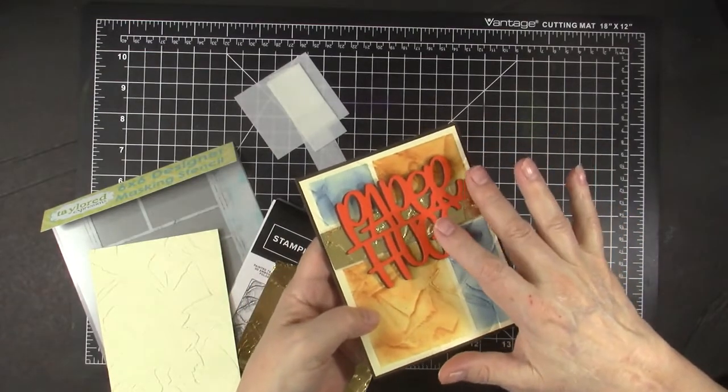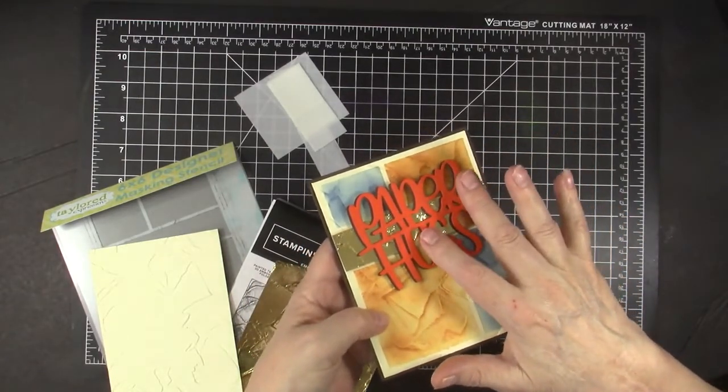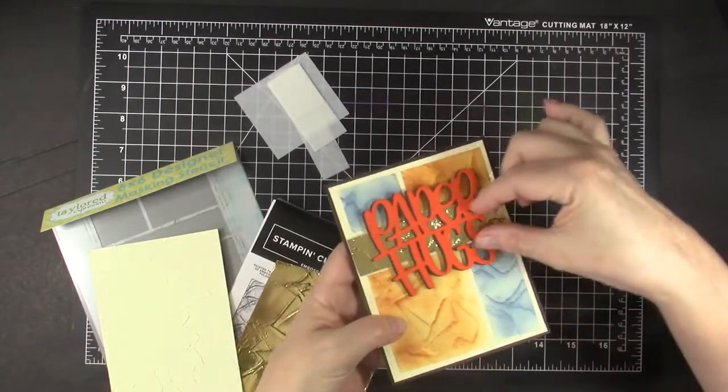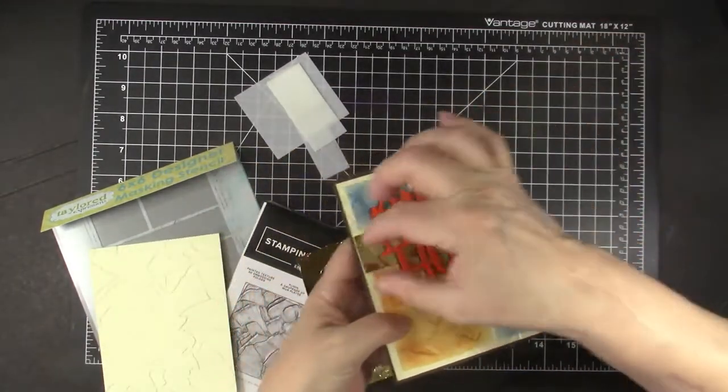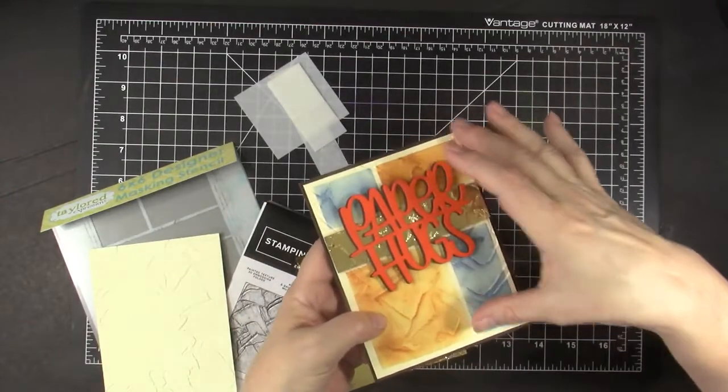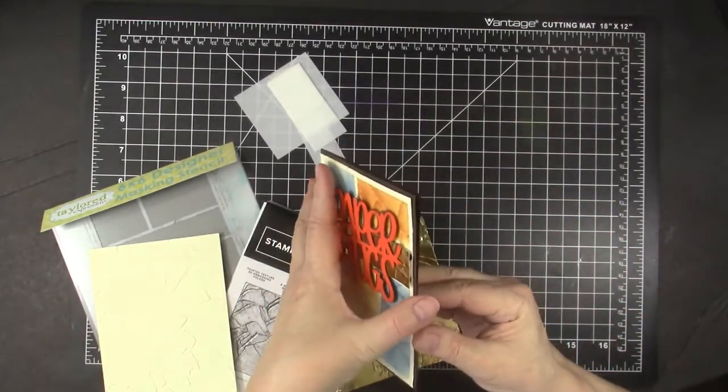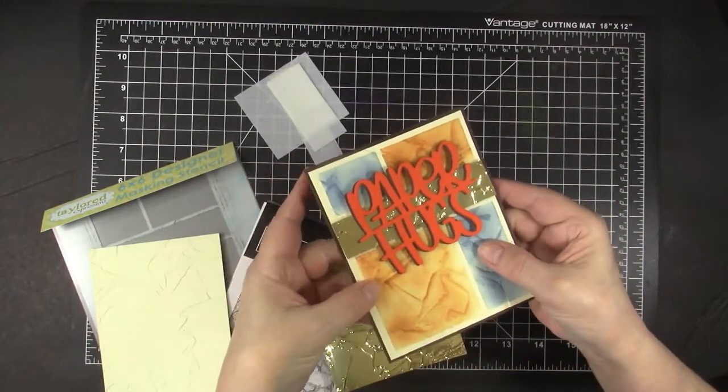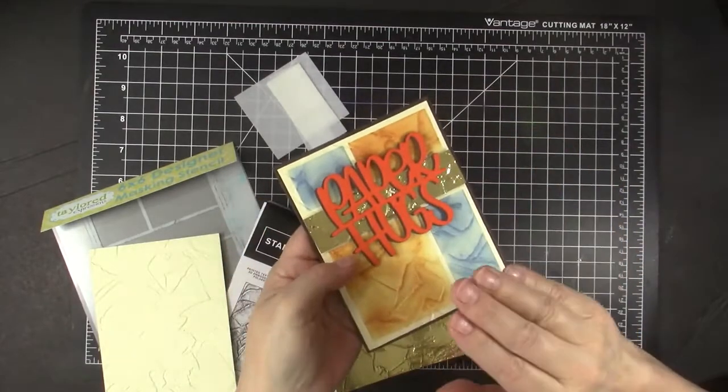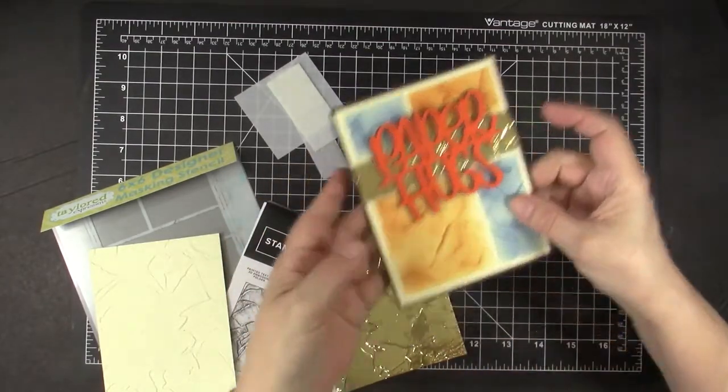I'll show you a close up. This Paper Hugs is a new die I got from Simon Says Stamps. And I raised this piece, a piece of this gold across there. I'm going to show you how I got that background and a really cool card combining stencils and embossing folders.